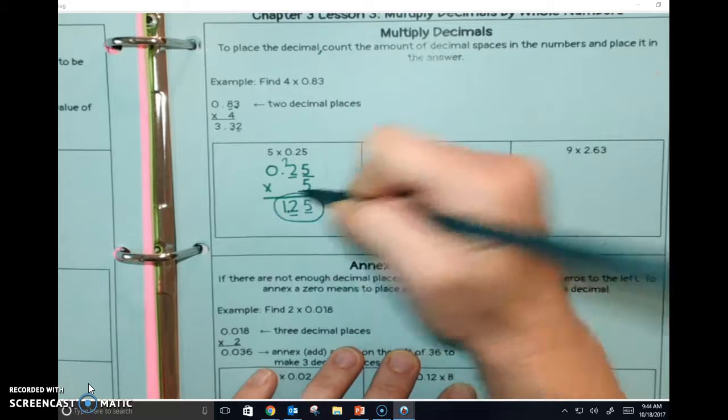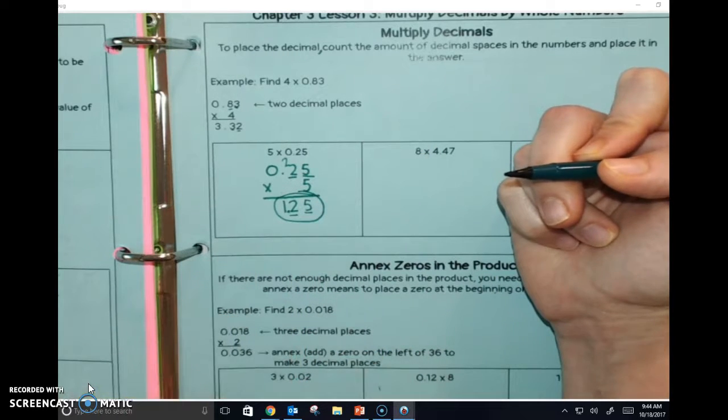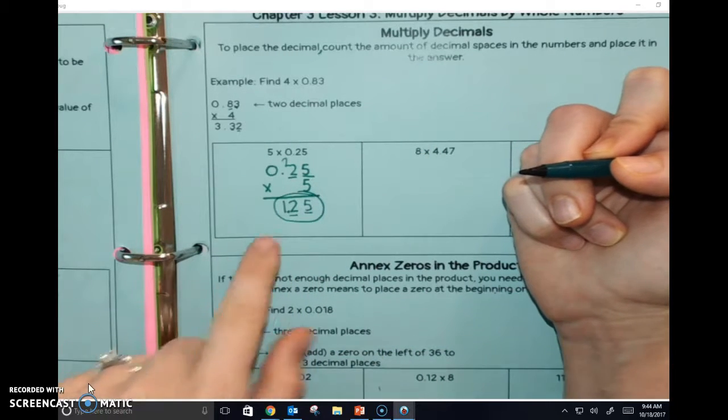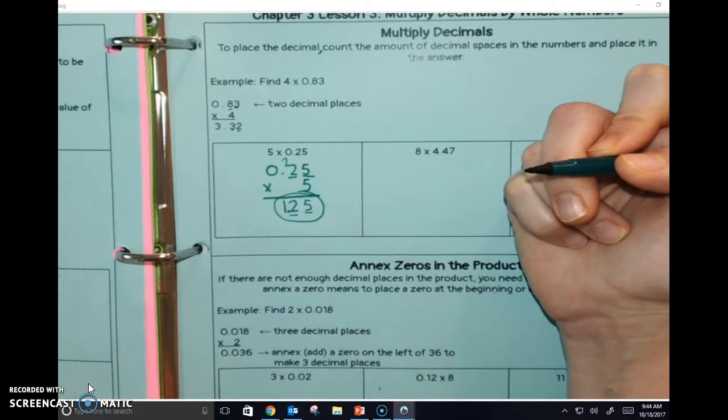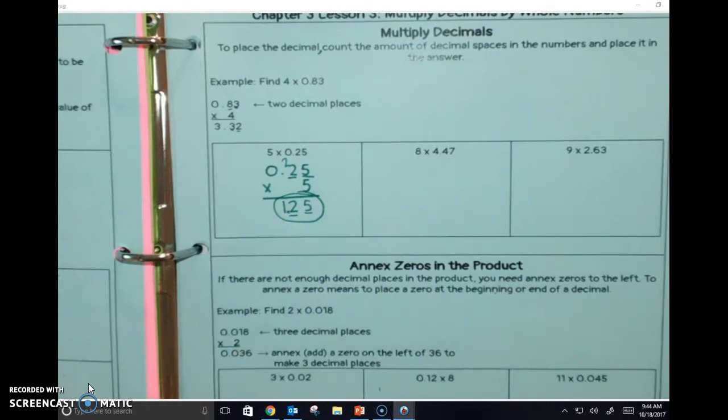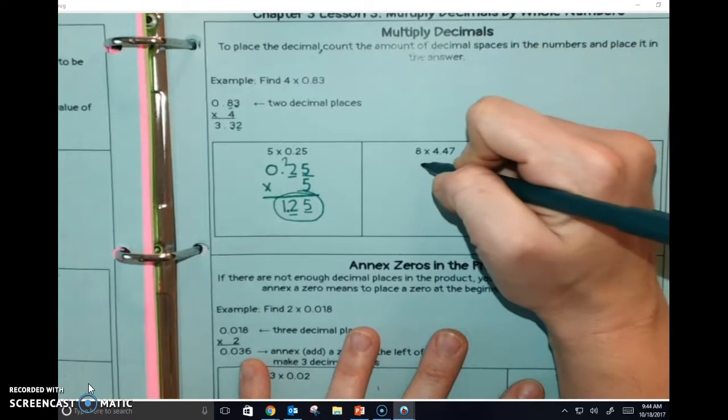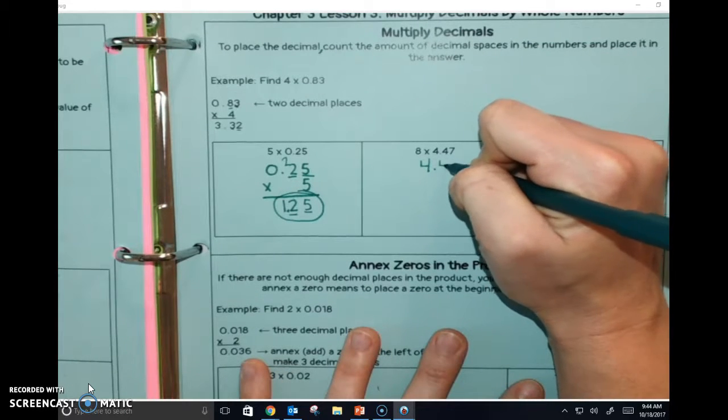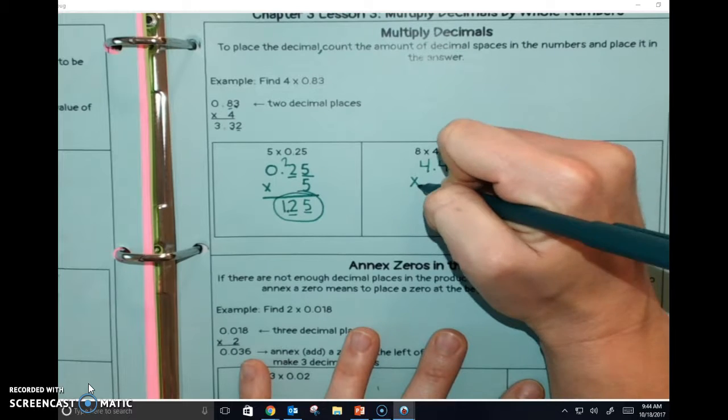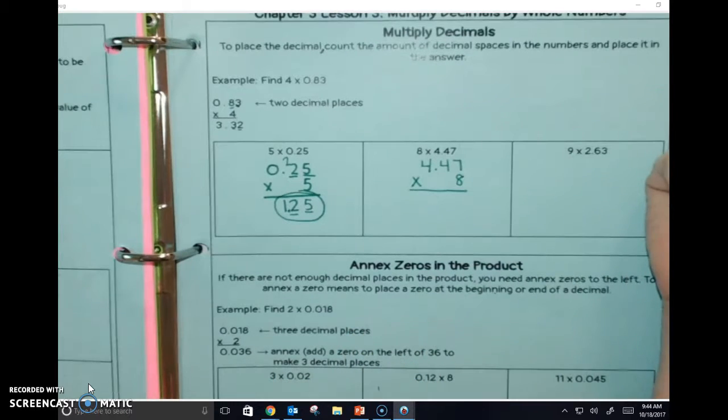1.25 is your answer. Now when we move on to this next one, we have 8 times 4.47. What number do you think you should put on top, Carter? 4.47, correct, because that's the longer one. It's easier to do when the longer one's on top, right?